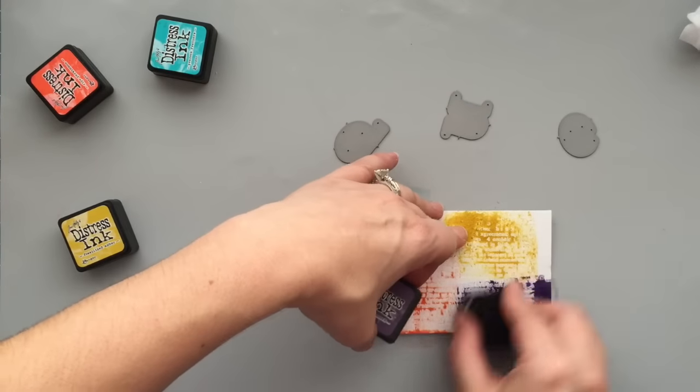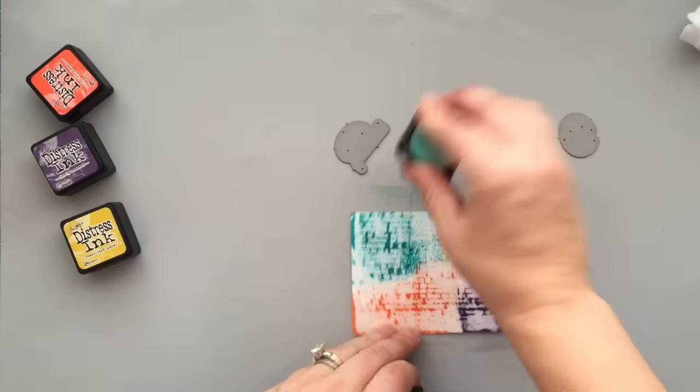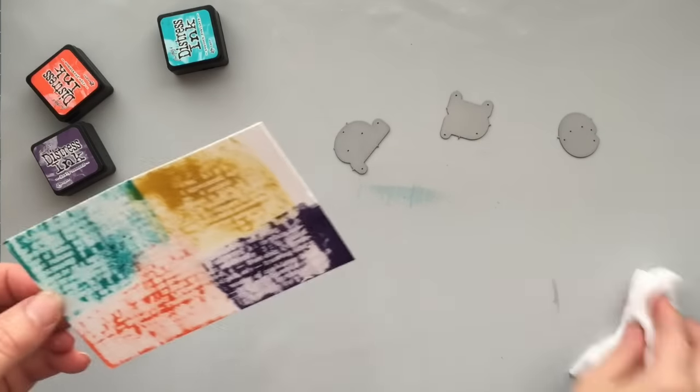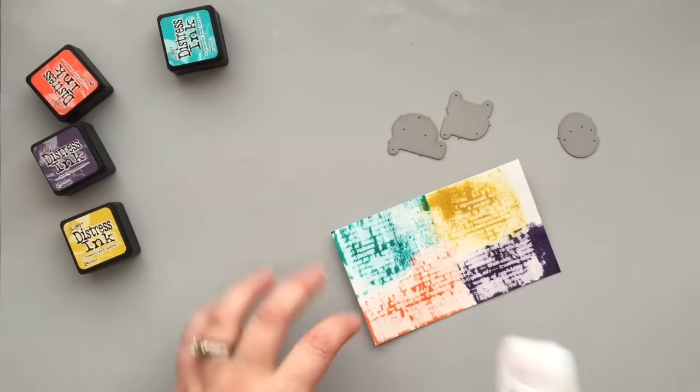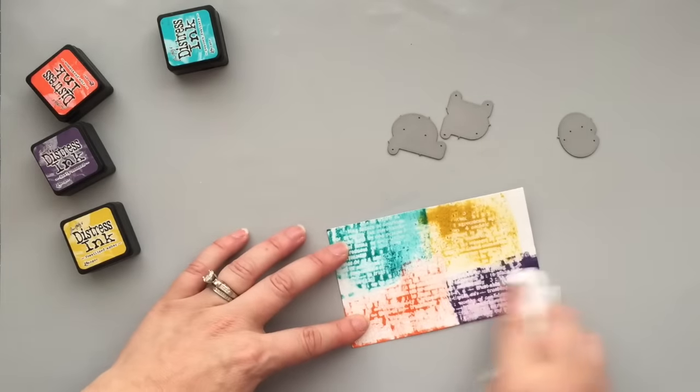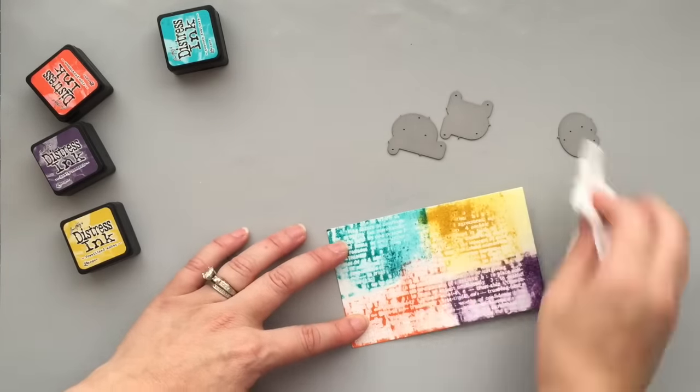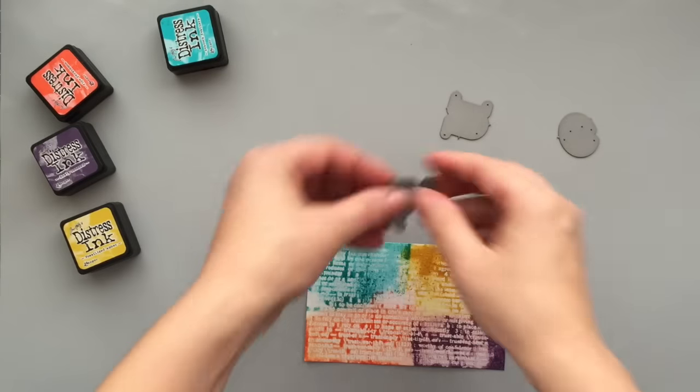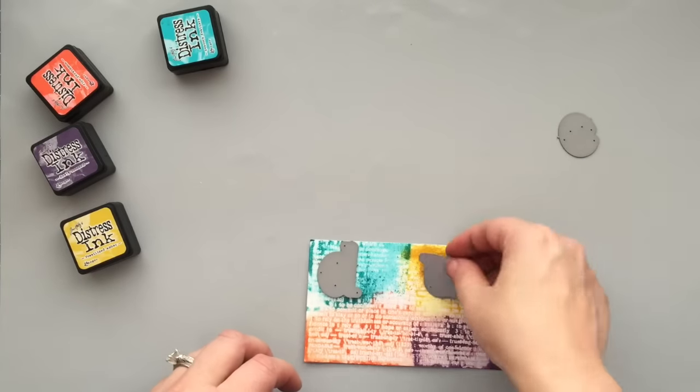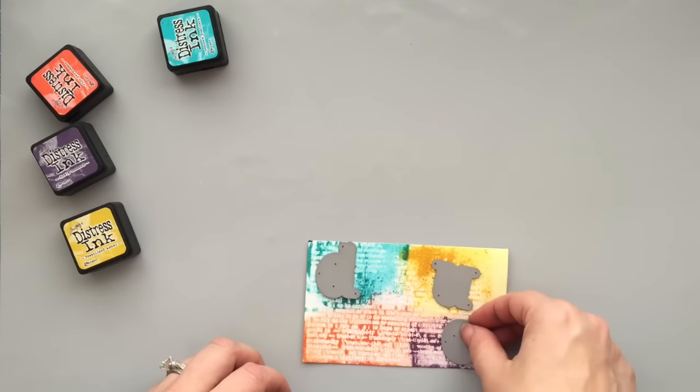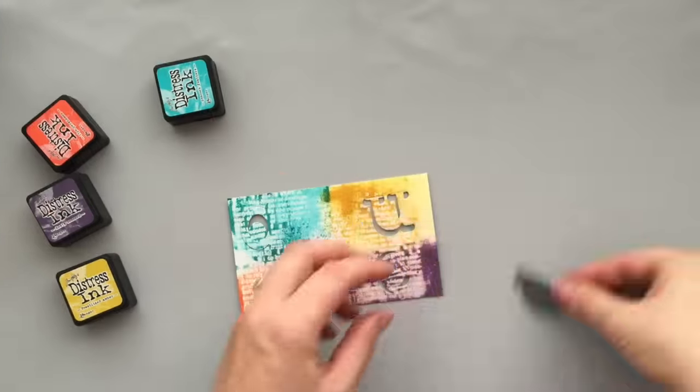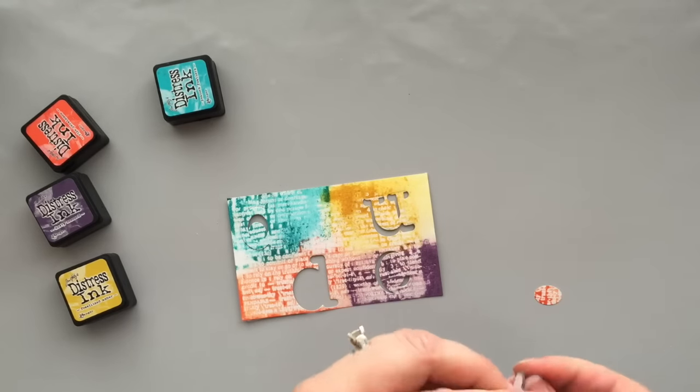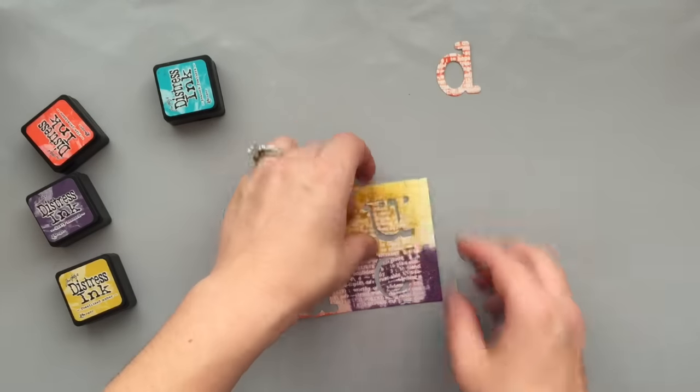I'm using Dusty Concord as the purple, Peacock Feathers is the teal, Ripe Persimmon is the orange, and Fossilized Amber is that yellow color. I went ahead and applied that just down to that cardstock, just inking up enough so my die will fit on it. Again, any inks that you have will work for this. Because we heat set that background, that text image is going to resist any ink that we put down.